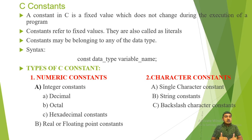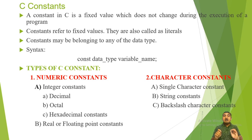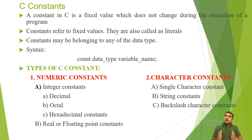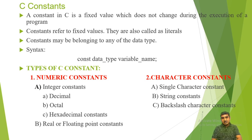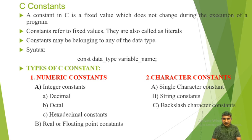In integer constant there are again three types: first is decimal, second is octal integer constant, and third is hexadecimal constant. In a real or floating point constant there is a fractional value or it is in the form of exponential form. In character constant there are three types: single character constant, string constant, and backslash character constant. A C constant is a fixed value that does not change during execution of a program.